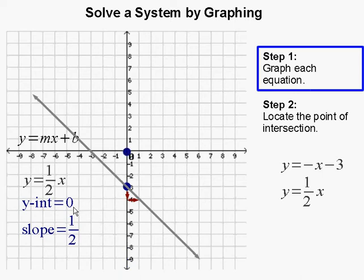Since our y-intercept is 0, we start at 0. Then we apply our slope, which is the rise of 1 over 2. Since it's positive, we go up 1 and over 2.